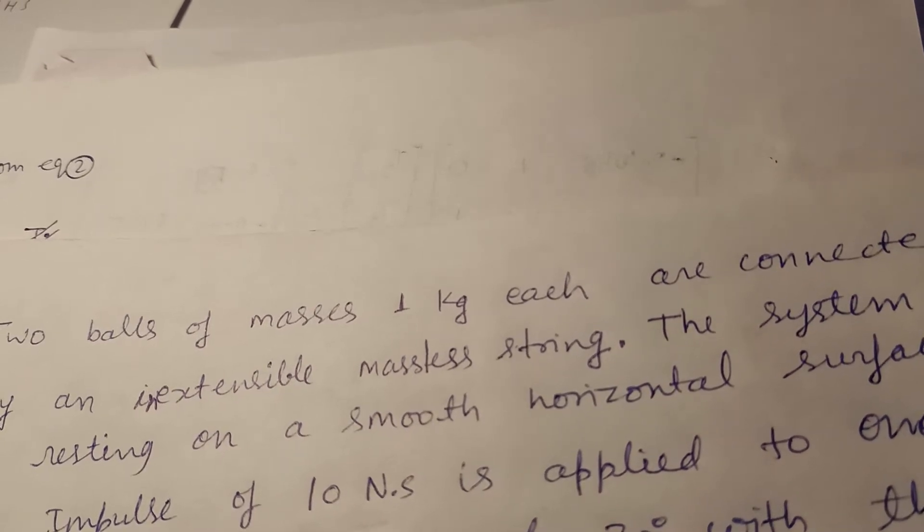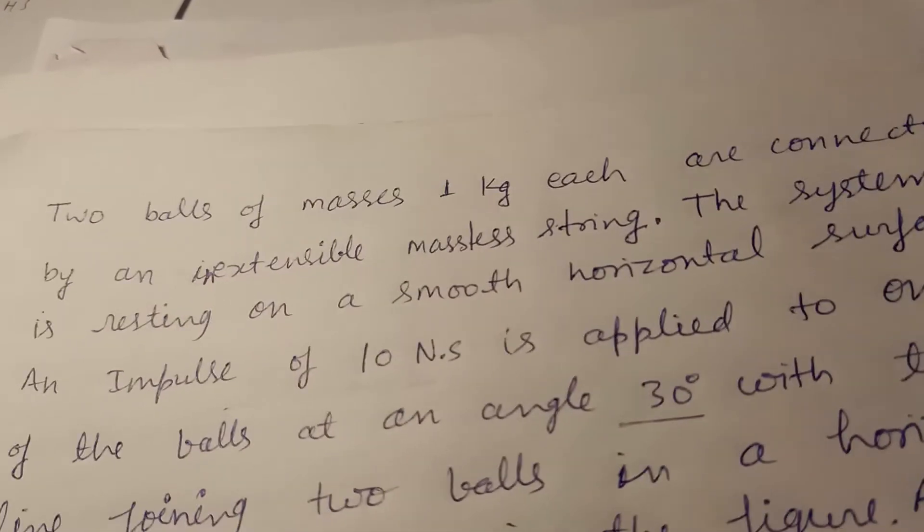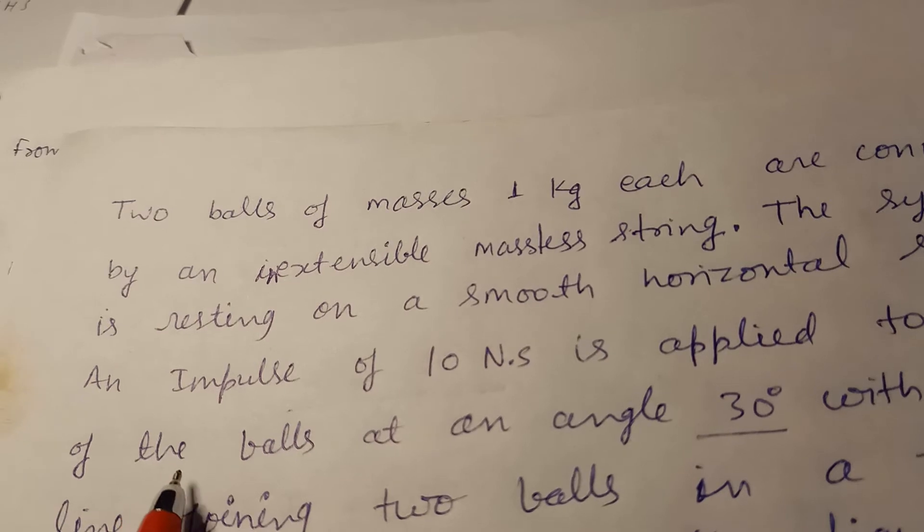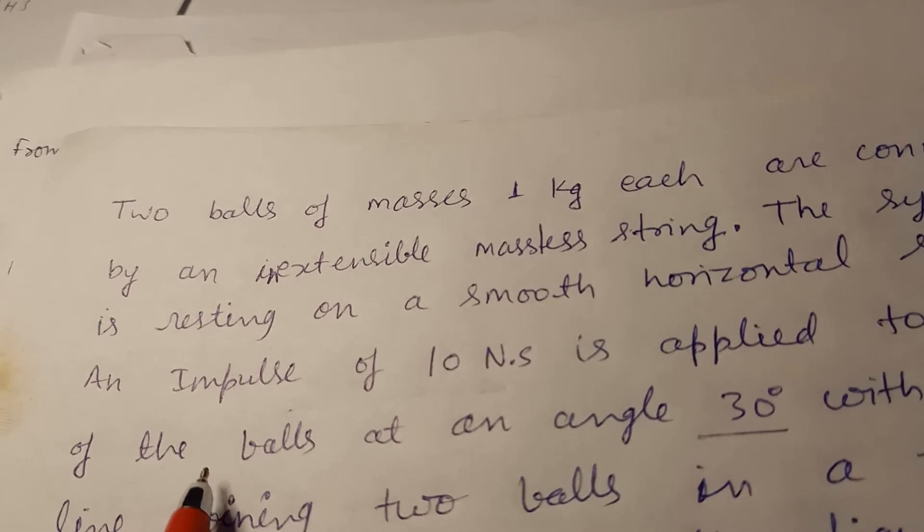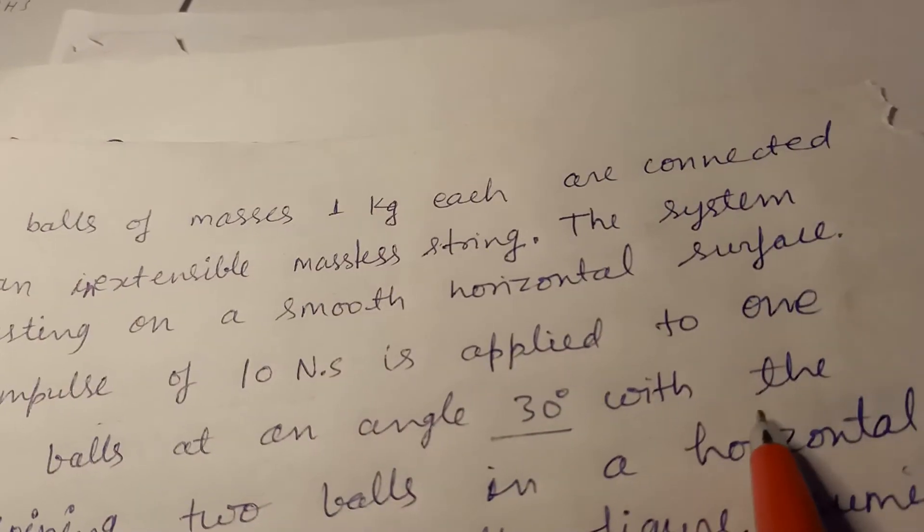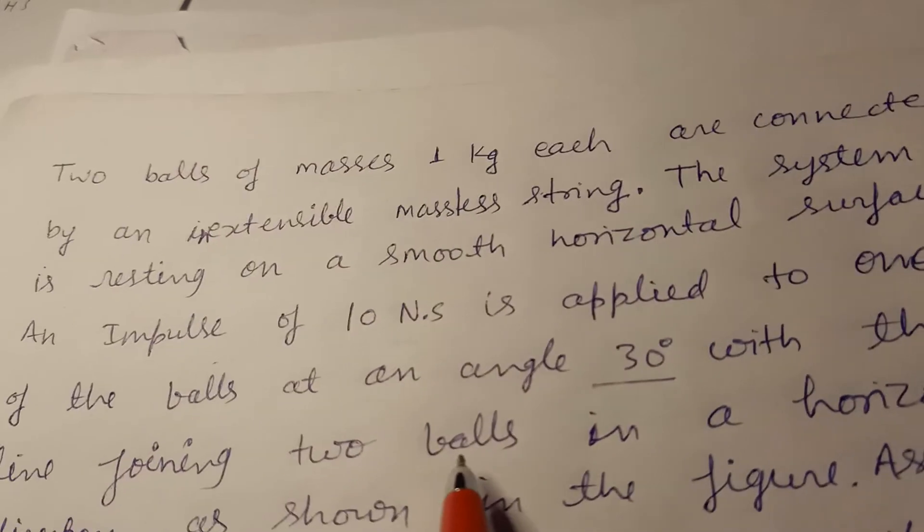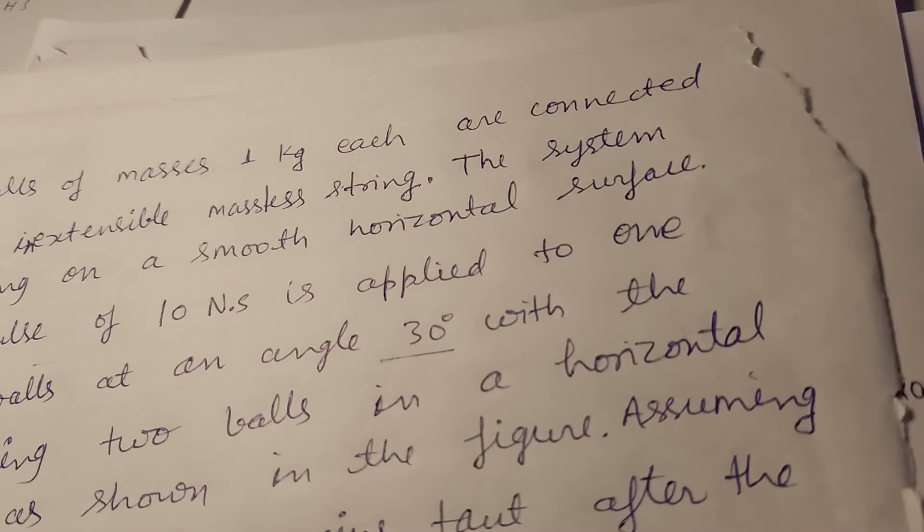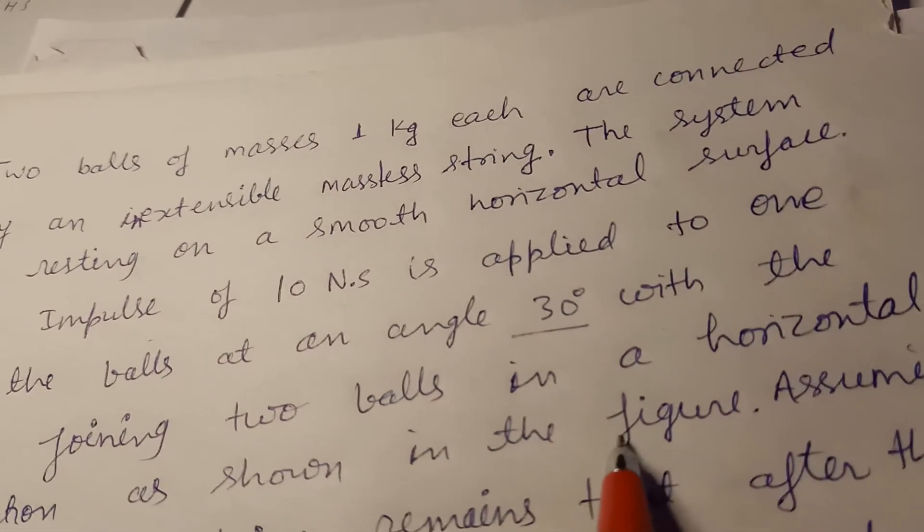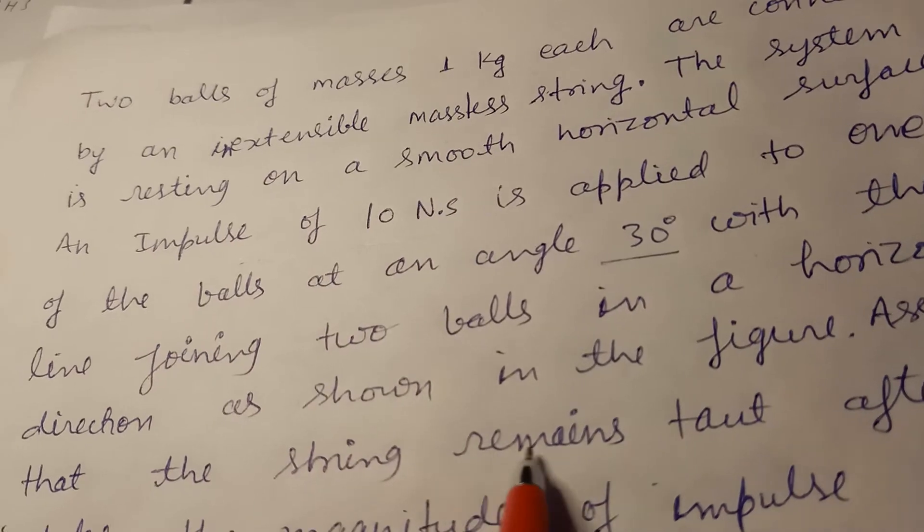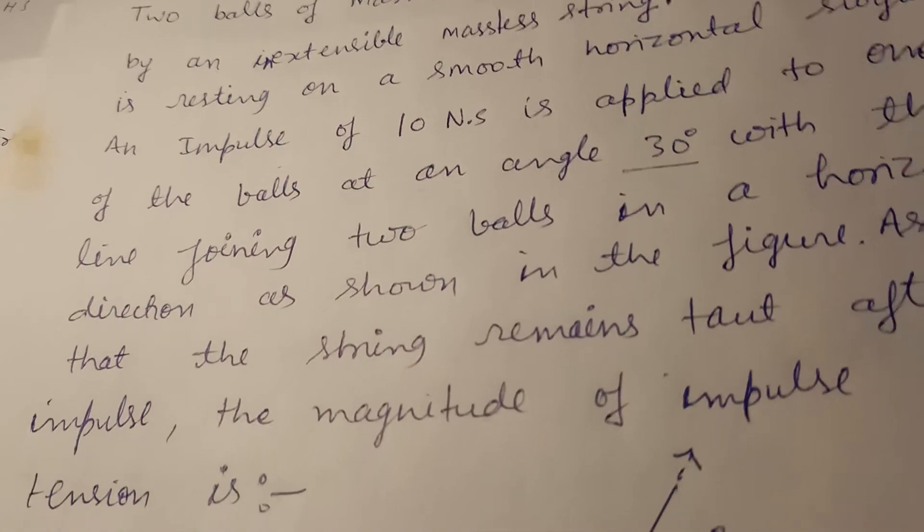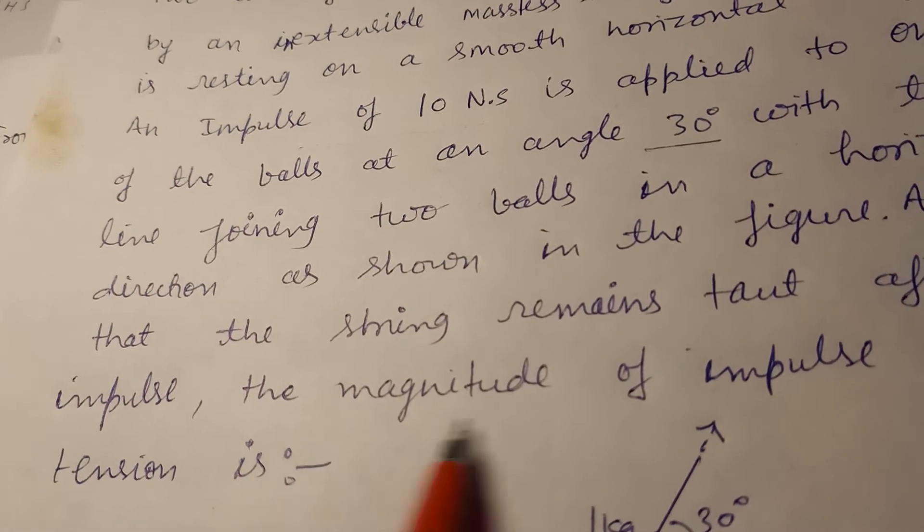Let me show you the question. The impulse is applied at an angle of 30 degrees with the line joining the two balls in a horizontal direction as shown in the figure. Assuming the string remains taut after the impulse, we need to find the magnitude of impulse of the tension.